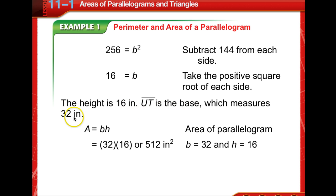UT is the base, which measures 32. So the area of a parallelogram is the base times the height, or 32 times 16, or 512 inches squared. So the perimeter is 104 inches, and the area is 512 inches squared.